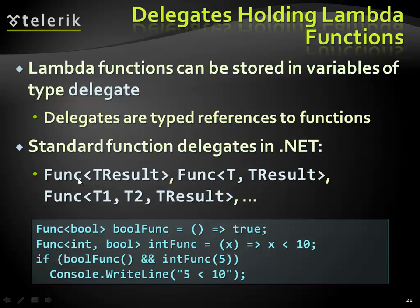The structure: we have the result — the return value type — or we have other input types, and the return is the last of the generic arguments.